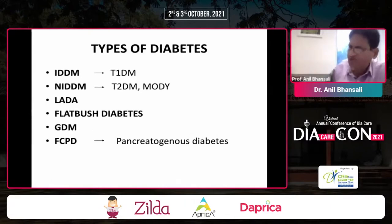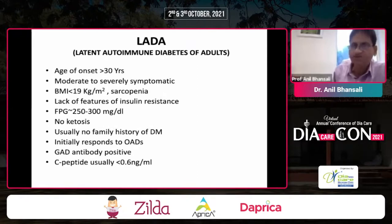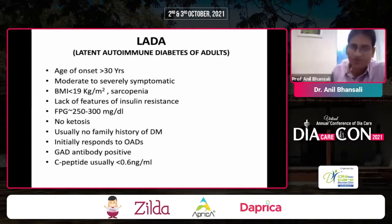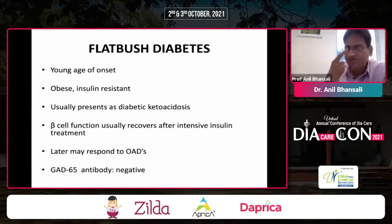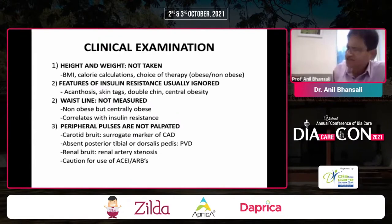Regarding types of diabetes: whether it is type 1, type 2, LADA, or Flatbush, the name matters because it has different connotations for treatment approach. LADA — latent autoimmune diabetes of adults — has onset usually above age 30, is quite symptomatic, C-peptide is low, high glucose values, no ketosis, no family history of diabetes, and initially responds to oral agents. That's why many consider it type 2, but GAD antibodies are positive and C-peptide is usually less than 0.6. Flatbush diabetes presents in young obese patients, is insulin resistant, often presents as DKA, but beta-cell function usually recovers after intensive insulin treatment; characteristically GAD antibodies are negative.